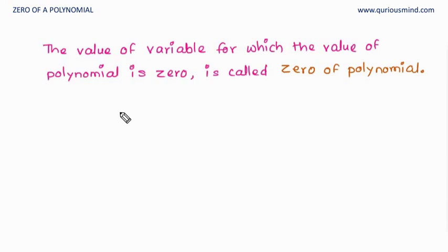Let's take a polynomial. This is a polynomial x square minus 4x plus 3. Now what happens if x is equal to zero? If x is equal to zero, I will write here value of variable and here value of polynomial. So if x is equal to zero, if I put zero here, zero, zero plus 3. So value of polynomial is 3.